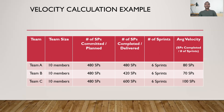For a regular scrum team, in the seventh sprint this velocity will be used as a reference for the upcoming sprint planning. If it is a scrum team within an Agile Release Train in the SAFe implementation, this velocity will be considered for the second PI planning — sprints 1 through 6 of the second Program Increment will use each team's individual velocity for their PI planning.